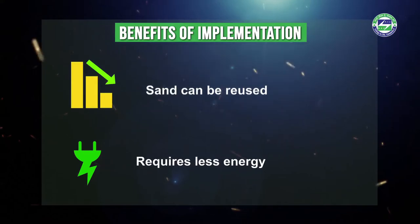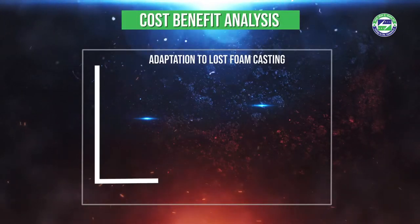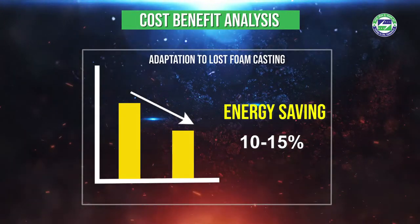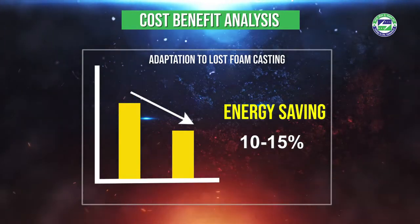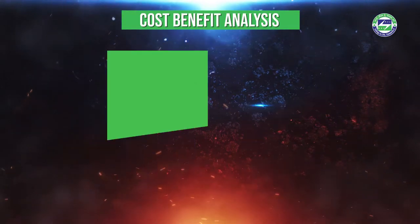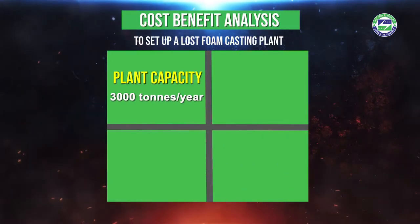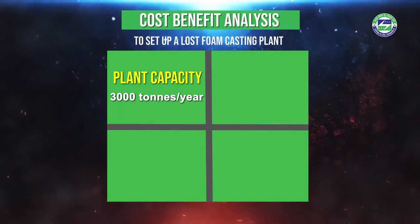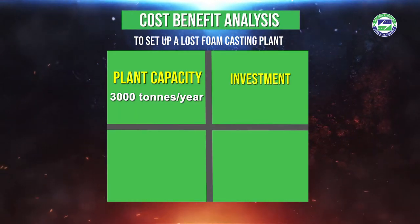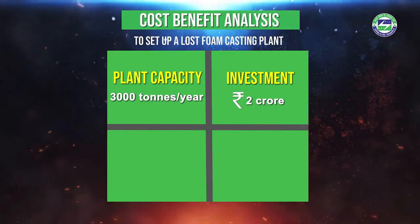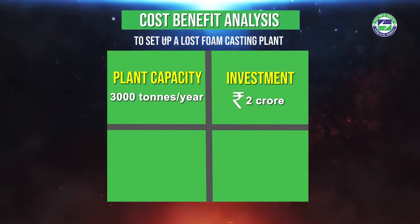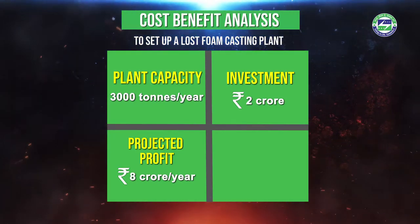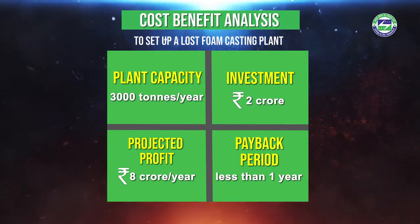Castings are dimensionally accurate with excellent surface finish. Sand used in the process can be reused. It requires less energy. Adaptation to lost foam casting in place of conventional mould casting leads to a saving of 10 to 15 percent in terms of energy in the overall foundry process. The estimated investment required to set up a greenfield vacuum-based lost foam casting plant of capacity 3000 tons per year is 2 crore rupees excluding land and development charges. The envisaged profit from the business is 8 crore rupees per year, implying a payback of less than a year.